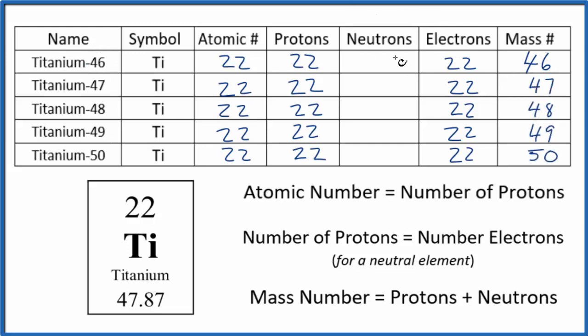To find the number of neutrons, we know that the mass number equals protons plus neutrons. So we have mass number and protons, so we can figure neutrons out. 22 plus something gives us 46. 22 plus 24, that would give us 46. Right here for titanium 47, 22 plus something gives us 47. That's 25. And we can figure the rest of these out as well.